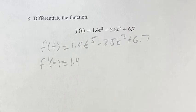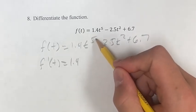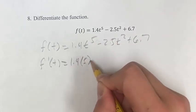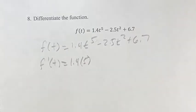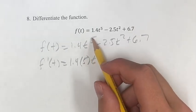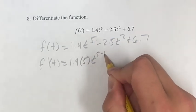Bringing that coefficient out first, then you take the exponent, and you bring it down. So you're going to multiply this to the coefficient, and then this exponent, subtract 1 from it, so 5 minus 1.